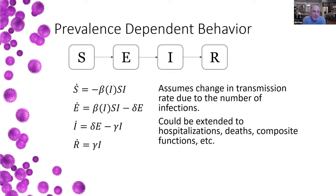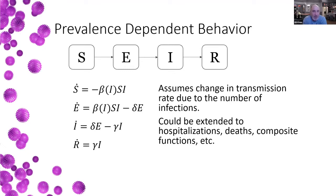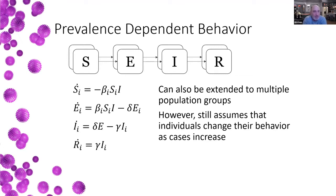The key point I want to talk about today is prevalence-dependent behavior. In that case, you add a function where beta is now a function of the infection level. This could be extended to the number of hospitalizations, deaths, or some composite function, but in essence it changes the transmission rate based on the number of infections. The assumption is that people change their behavior as infection numbers rise, which leads to a flattening of the curve.